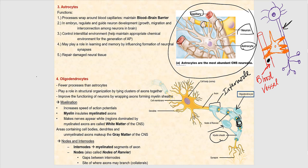Looking carefully at the picture, we have two oligodendrocytes. One oligodendrocyte has three arms, each hand wrapping around a segment of the axon. The other oligodendrocyte has two arms, each wrapping around a segment of the axon. So each wrapped segment is an internode — also referred to as myelin sheath or myelin.